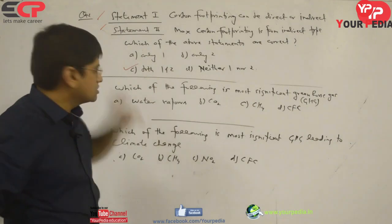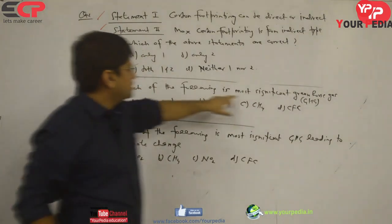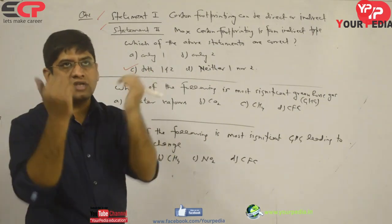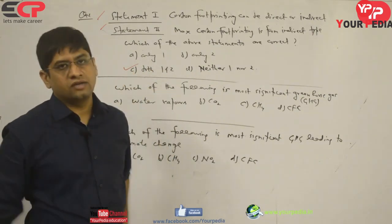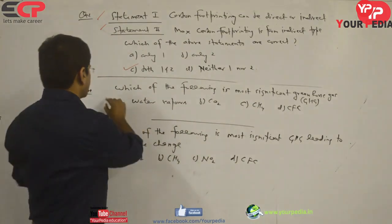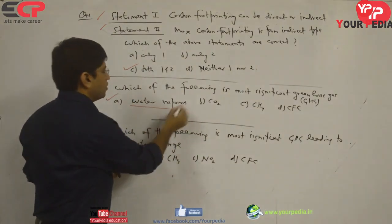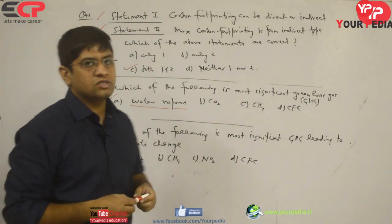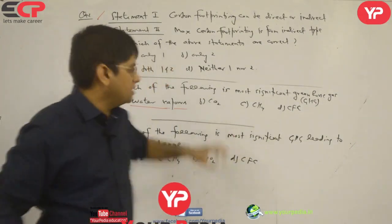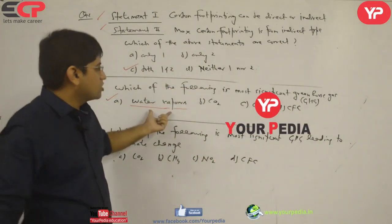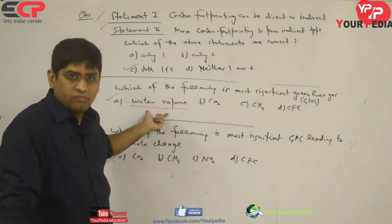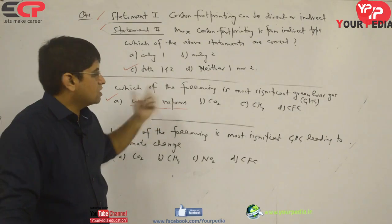Next question: which of the following is the most significant greenhouse gas? A greenhouse gas traps solar energy. Water vapor is mainly responsible for the greenhouse phenomena — that is a weather phenomena. Greenhouse effect is not a bad thing; we survive because of greenhouse gases. So water vapor is the answer for the most significant greenhouse gas.